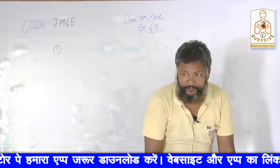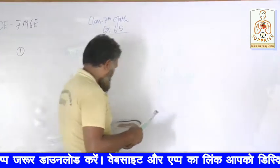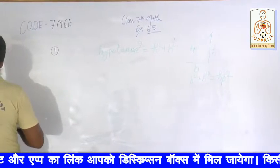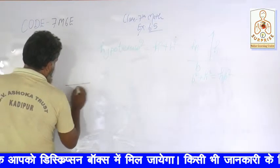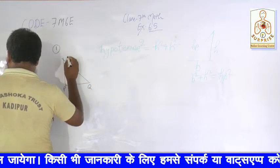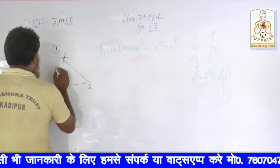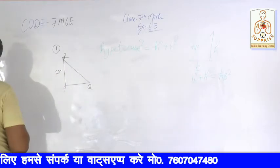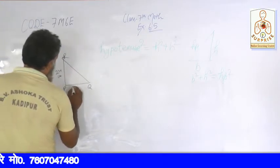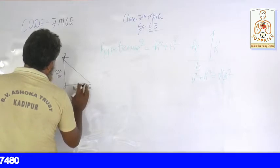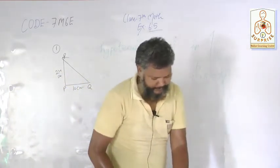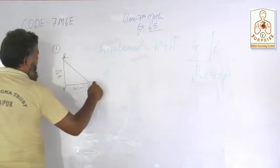Ek angle hai PQR — PQR is a triangle, jahan P hai, Q hai, R hai. Hum ek rough figure bana lete hain samajhne ke liye. Yeh jo PR hai toh 24 cm hai, aur jo PQ hai woh 10 cm hai. Humein kya nikalna hai? QR. QR nikalne ke liye hum QR ka square nikalenge.